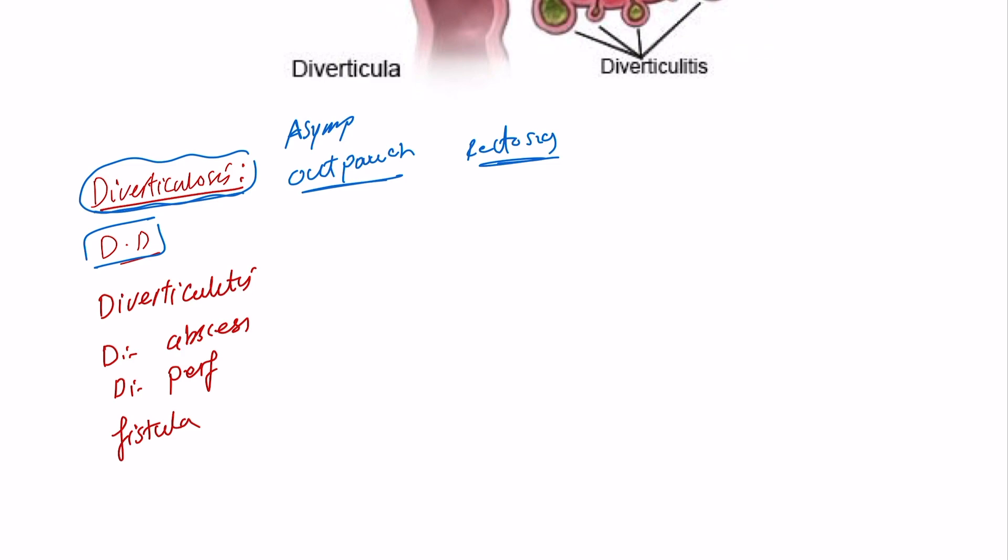Diverticular disease is when they come to you with pain in the left iliac fossa, and this pain is specifically after eating, and you examine them, there is some sort of tenderness, and also they are known to have chronic constipation or chronic straining as well. And it particularly happens at older age, who eat high fat diet, or maybe a low fiber diet. So this is diverticular disease.